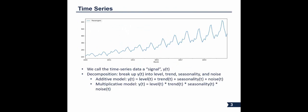Time series decomposition is what we're going to do today. The decomposition models we have are two: the additive model and the multiplicative model. It's simply taking those four components — level, trend, seasonality, noise — and either adding them together or multiplying them together. When we get into Python and Jupyter Notebooks, we'll select either additive or multiplicative, and we'll talk about the best option to choose.